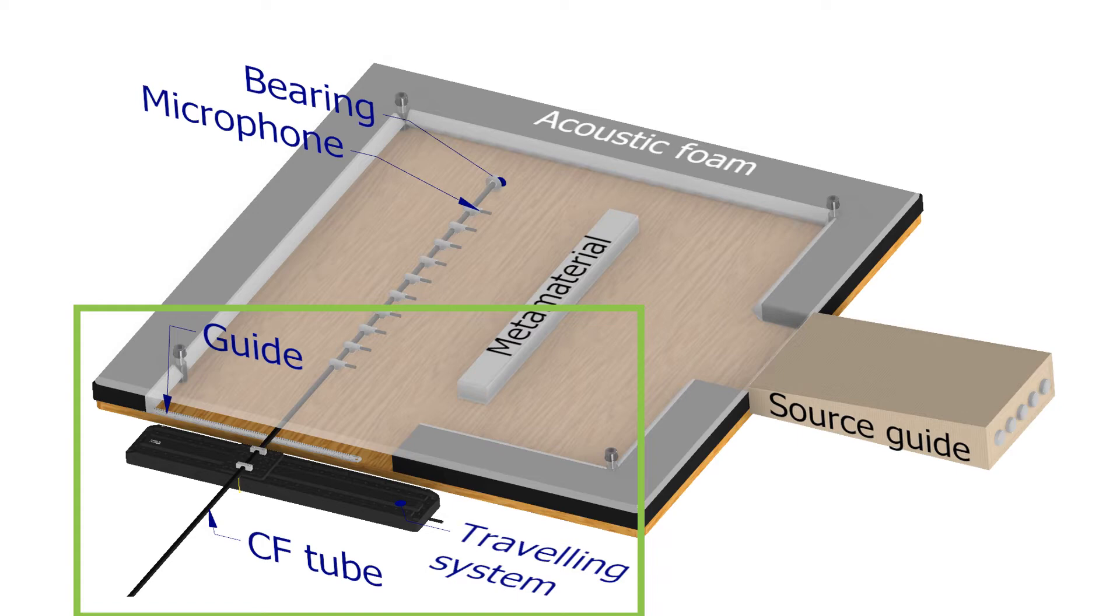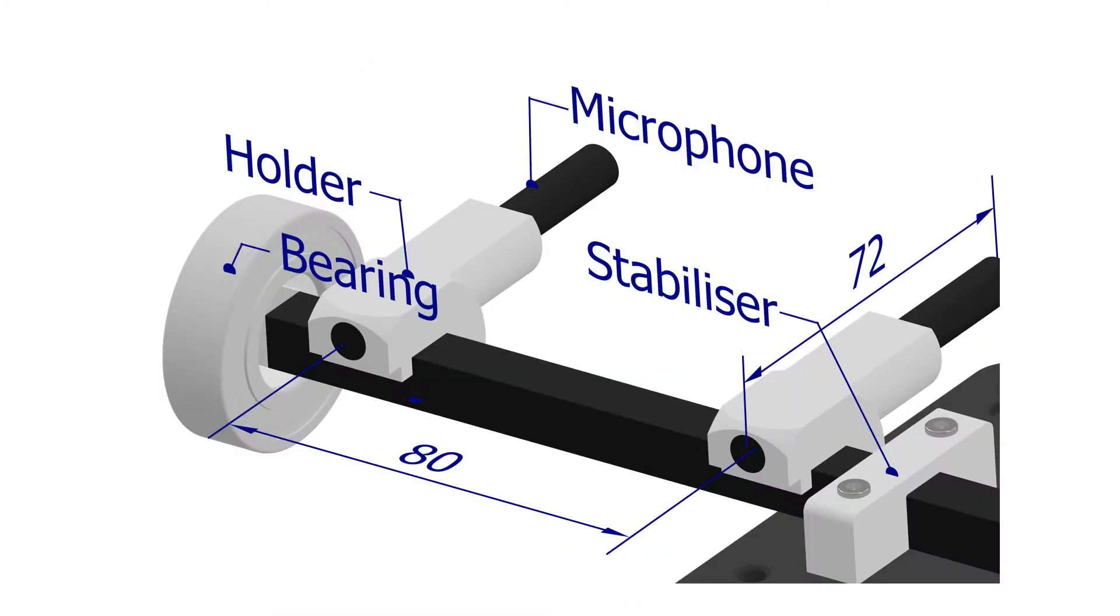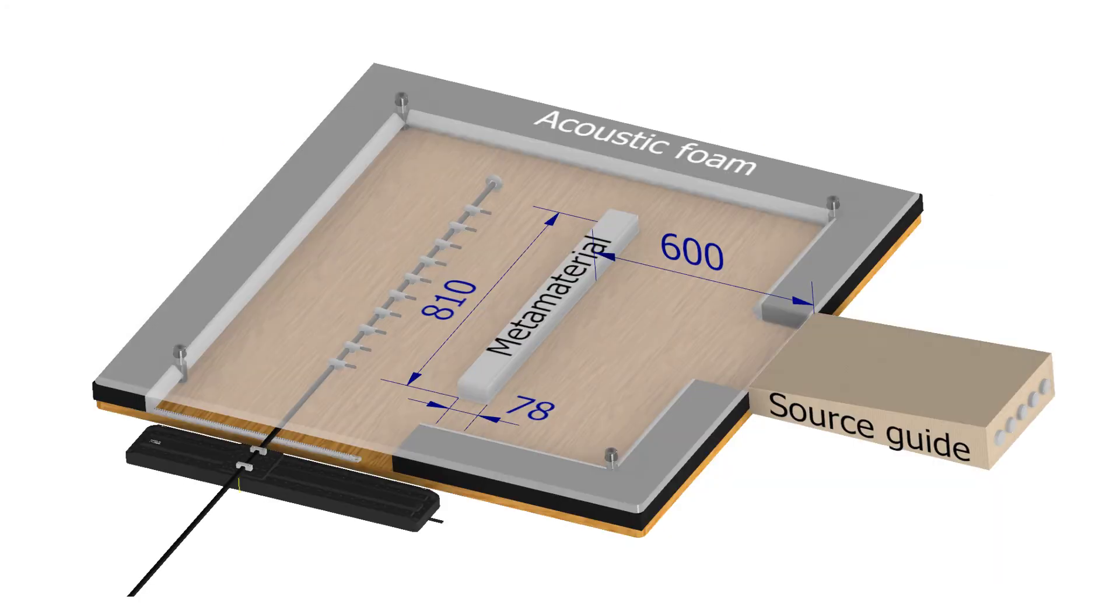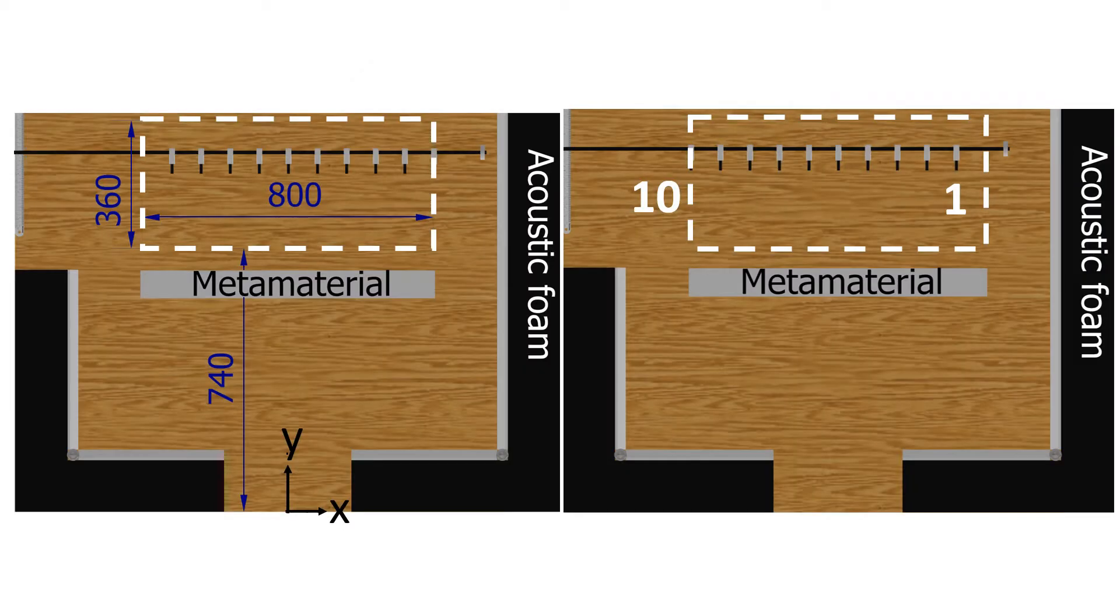Measurements of pressure fluctuations were performed with 10 microphones evenly spaced at 80 millimeters apart. The 3D printed metamaterial was positioned at 600 millimeters from the entrance and it is sandwiched between the two panels. The figure on the left indicates the region where the pressure field was mapped.